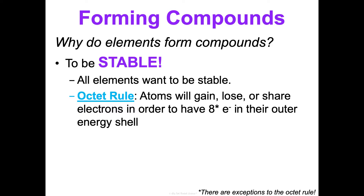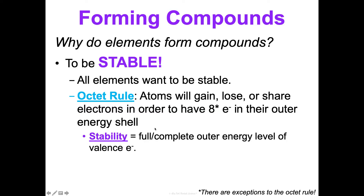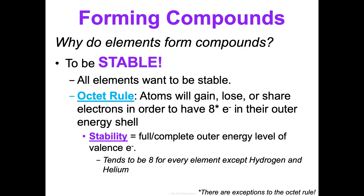Stability usually means following the octet rule — atoms will gain, lose, or share electrons in order to have eight in their outer energy shell. There are exceptions: hydrogen and helium only have room for two valence electrons, and some compounds like BF3, PCl5, and SF6 hold more than eight. But in general, we're shooting for eight. Stability really just means a full and complete outer energy level of valence electrons.